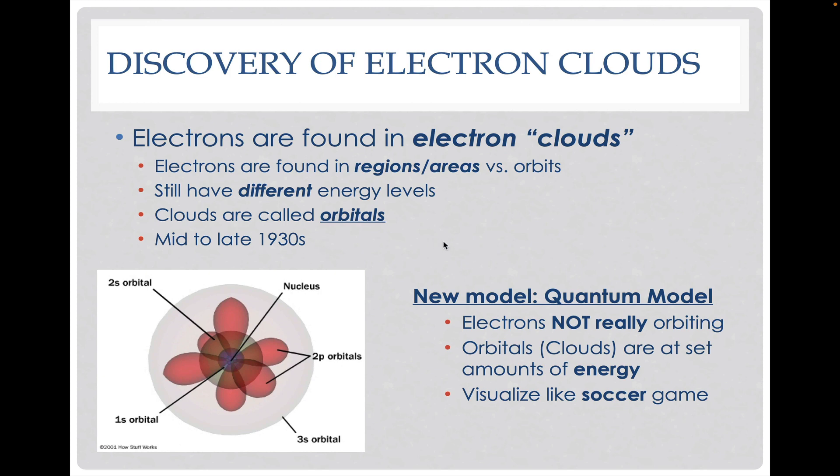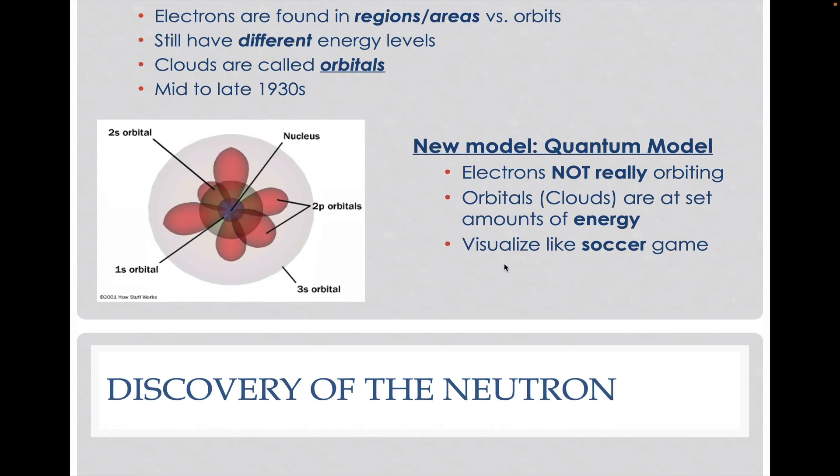So all of this work actually happened in the late 1800s to the 1930s. The name of this new model is called the quantum model, and the big things are the electrons are not orbiting anymore. They're still in set amounts of energy, but they are now in these regions, kind of like if you had talked about a soccer game. Where are the soccer players? You'd say on the soccer field. Same thing here. Where are the electrons? Well, they're inside these orbitals, but we really don't know where.